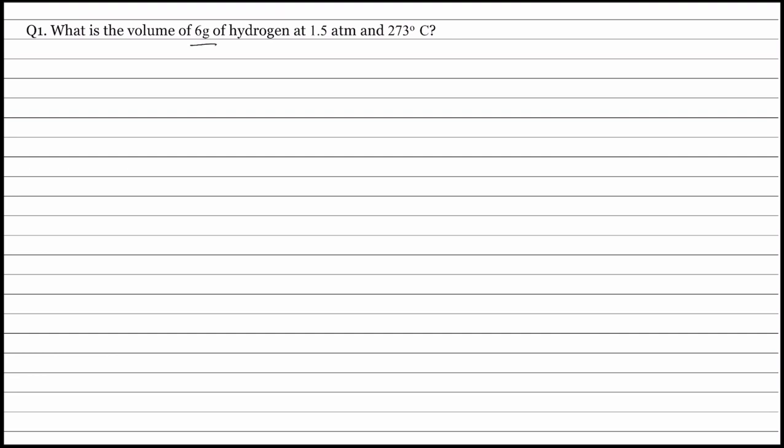Weight of hydrogen is 6 gram. Pressure is 1.5 atmosphere. Temperature is 273 degree centigrade. Applying the ideal gas equation, that is PV is equal to nRT.